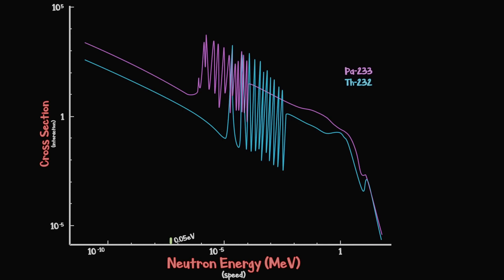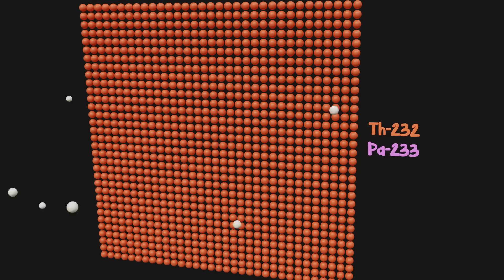Protactinium-233 has a neutron cross-section about five times greater than thorium-232. If Pa-233 absorbs yet another neutron becoming Pa-234, it will hastily decay into uranium-234, which is not fissile. Early on, this is not a big issue as the sheer amount of thorium absorbs far more neutrons than protactinium. But over time, thorium concentrations will decrease while protactinium concentrations increase.